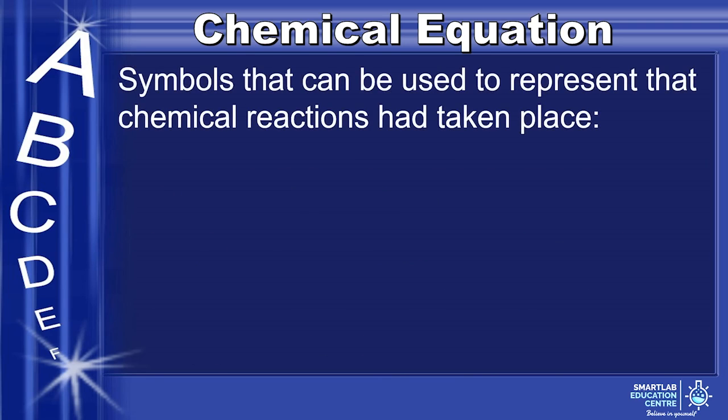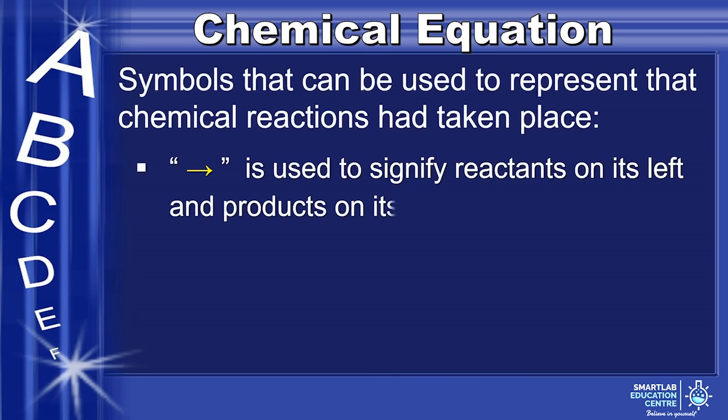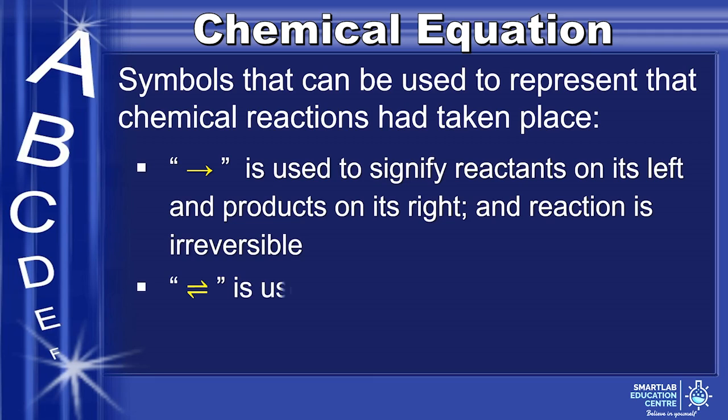There are several symbols that can be used to represent that chemical reactions had taken place. The single left to right arrow is used to signify reactants on its left and products on its right, and reaction is irreversible. The dual direction arrow is used to signify that reaction is reversible.